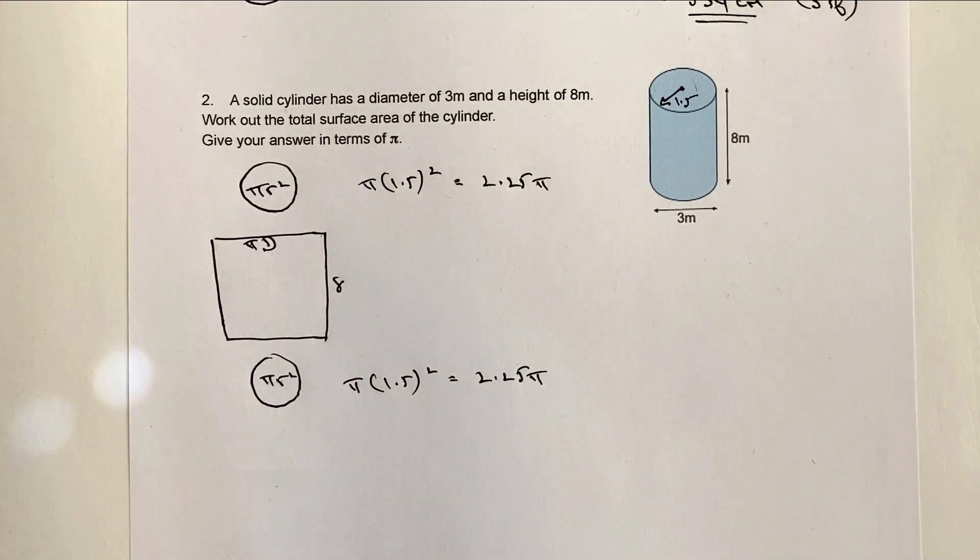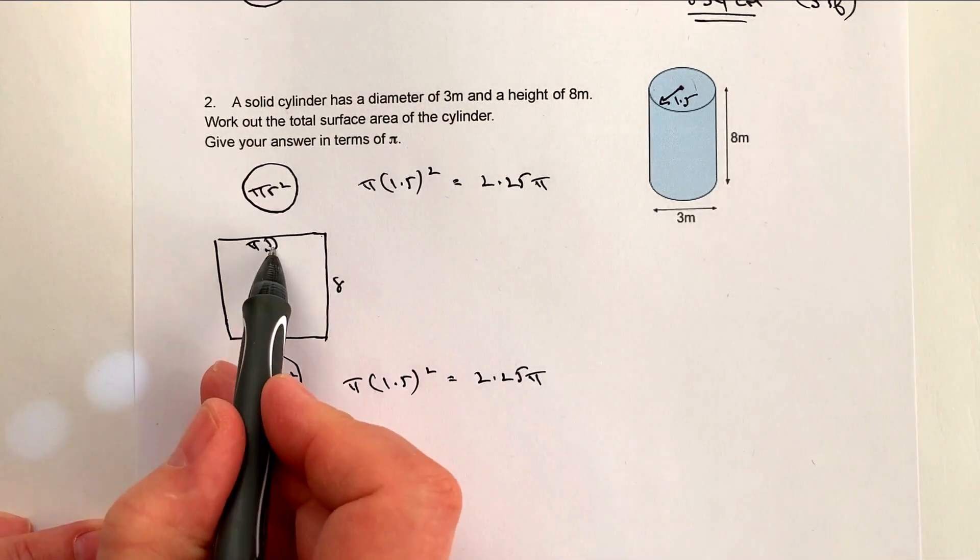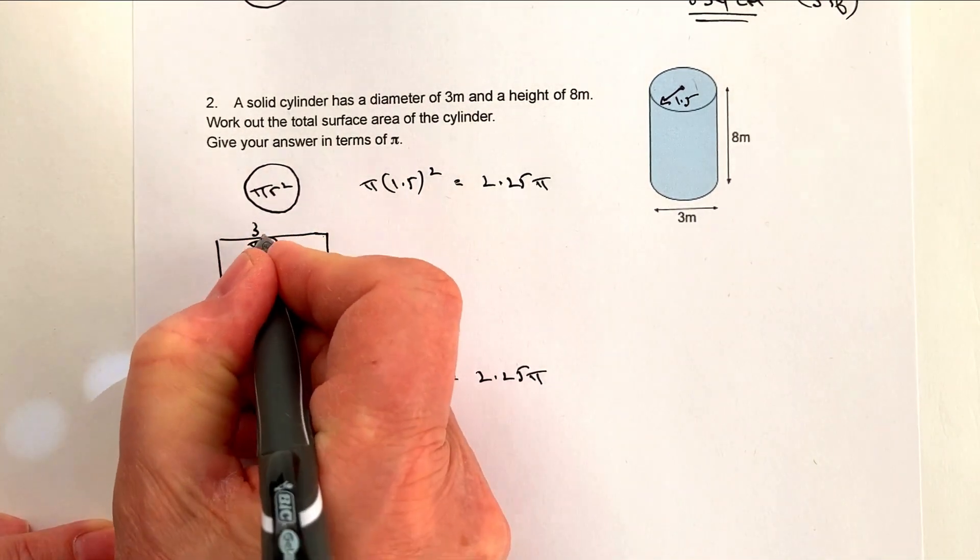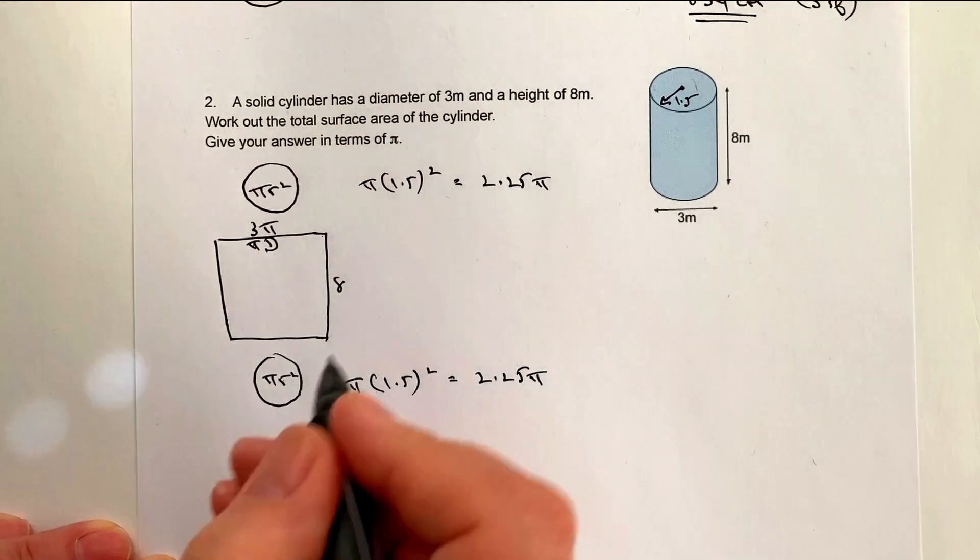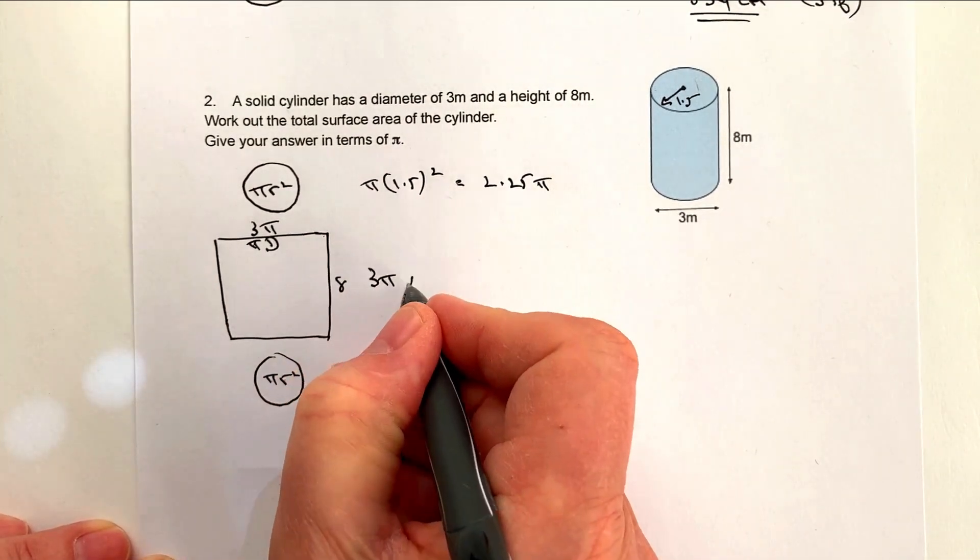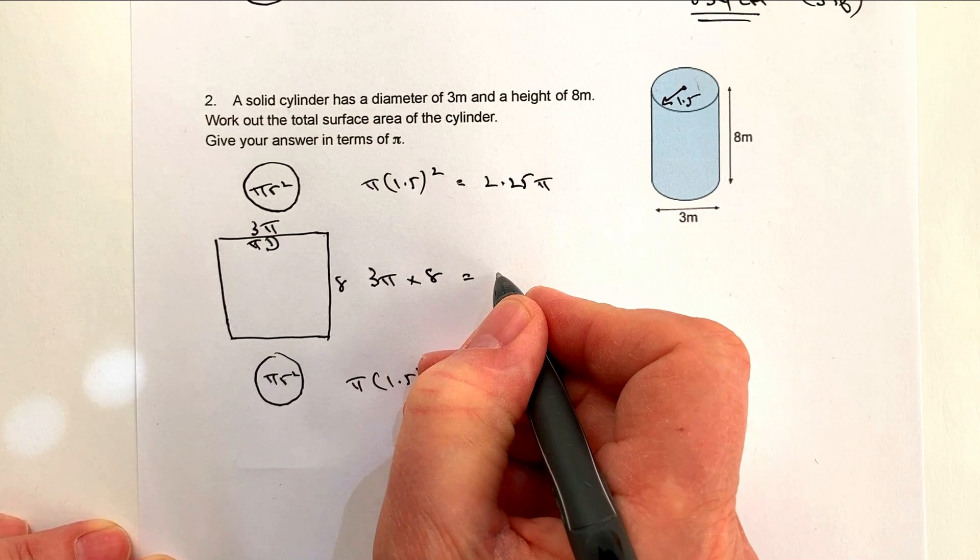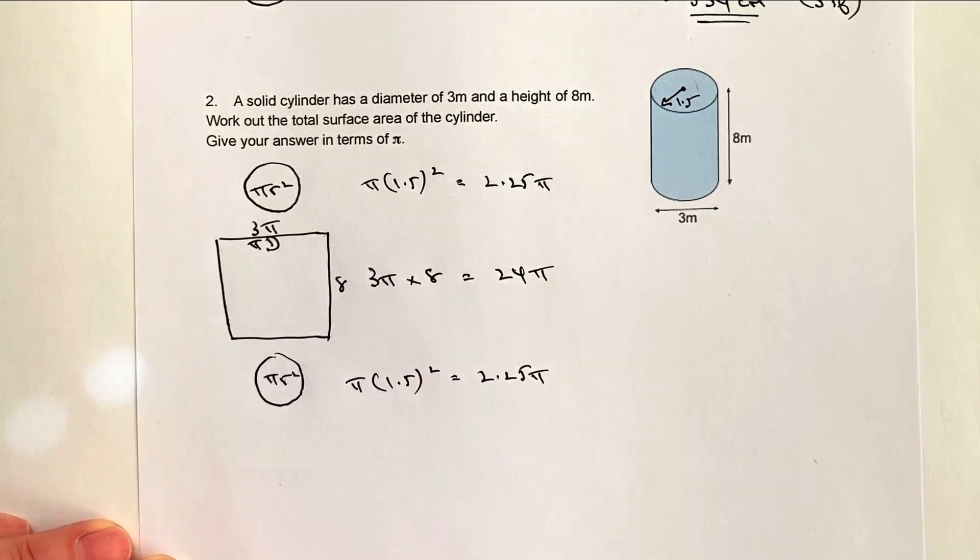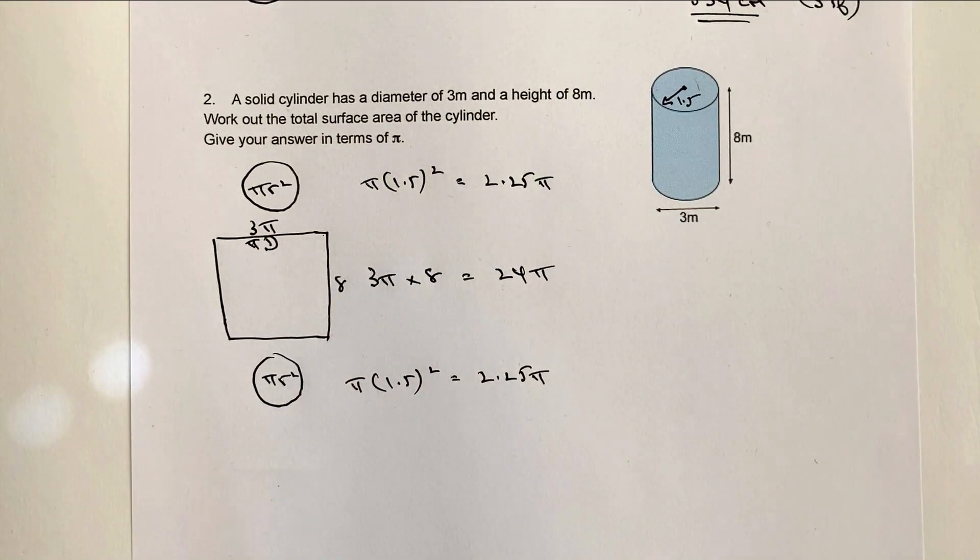So the rectangle in the middle. Let's have a look at that. Well, we know now that the diameter is 3 meters. So actually, π times the diameter is going to give me 3π. So I've got 3π times 8. Well, that's going to give me 24π. And then it really is just a case of, as we did before, adding up these numbers.